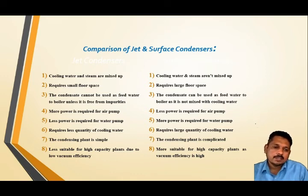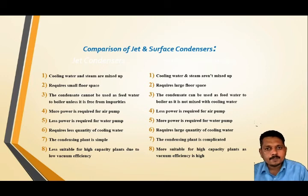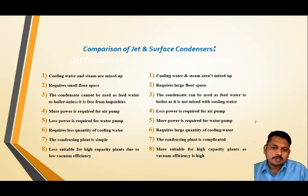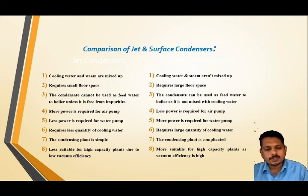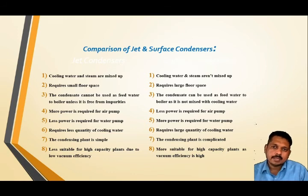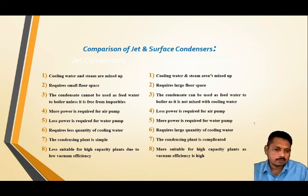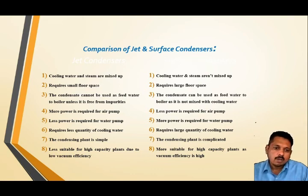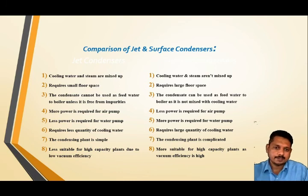In a surface condenser, spiral-shaped tubes carry the water while steam passes through and gets condensed, but this requires rapid cooling water circulation, so more power is needed for water pumping. A jet condenser requires less quantity of cooling water since steam and water mix directly, while a surface condenser requires more water since they are isolated. The condensing plant of a jet condenser is simple, while a surface condenser plant is complicated. Finally, jet condensers are less suitable for high capacity plants due to low vacuum efficiency, while surface condensers are more suitable for high capacity plants due to higher vacuum efficiency.